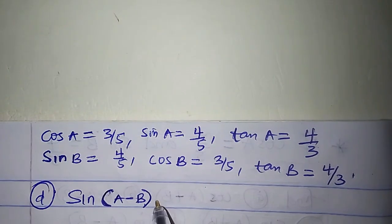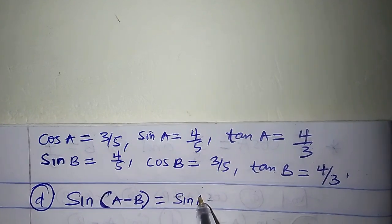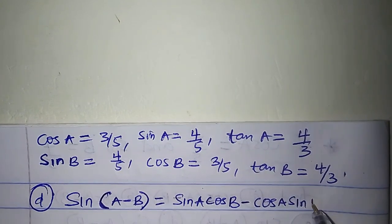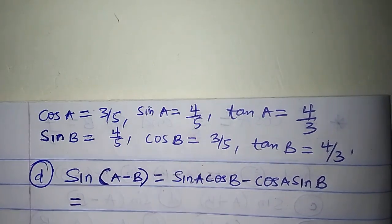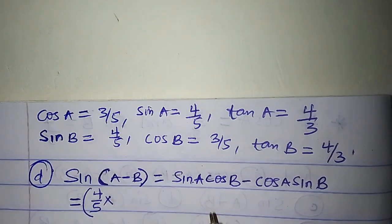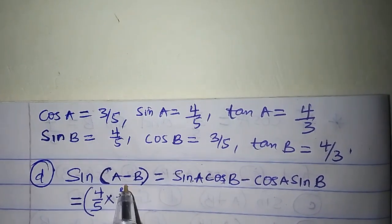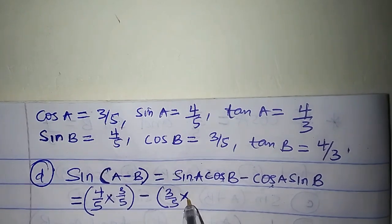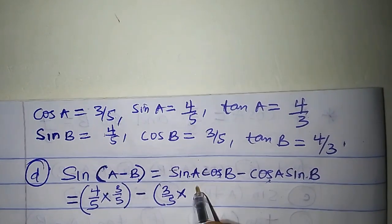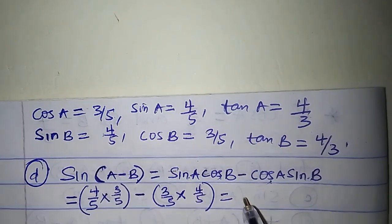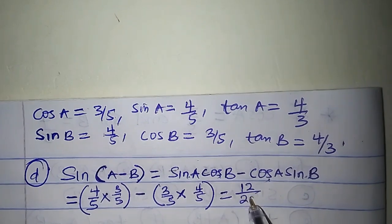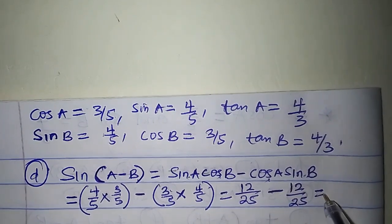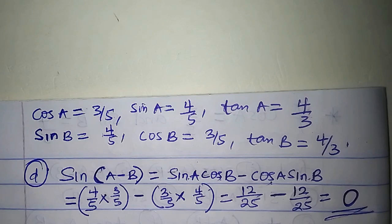What is sin(A−B)? Sin(A−B) = sin A cos B − cos A sin B. Sin A is 4/5, times cos B which is 3/5, minus cos A which is 3/5, times sin B which is 4/5. We get 12/25 minus 12/25, so sin(A−B) equals 0.